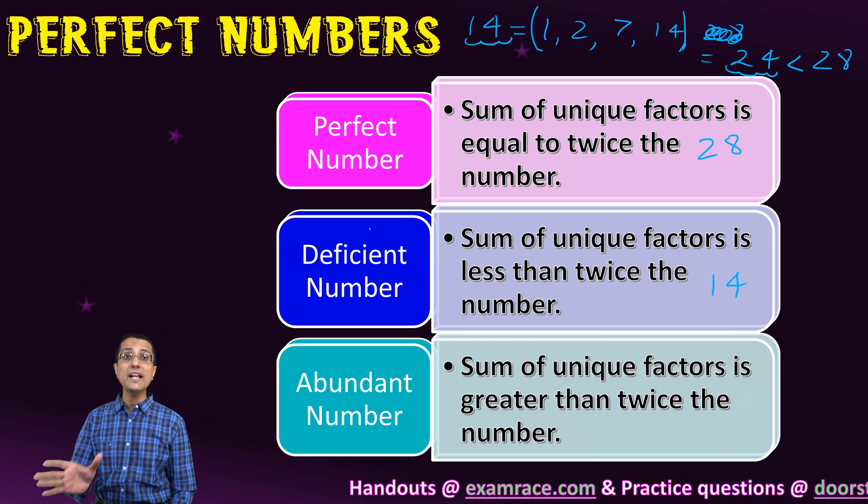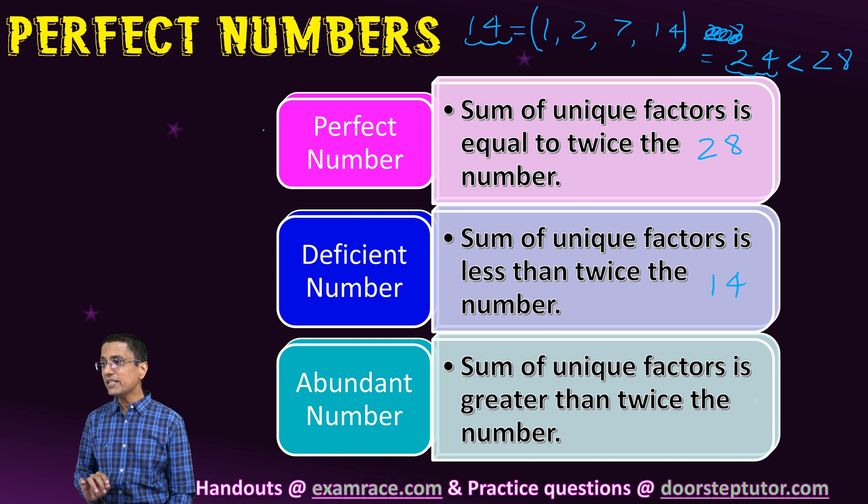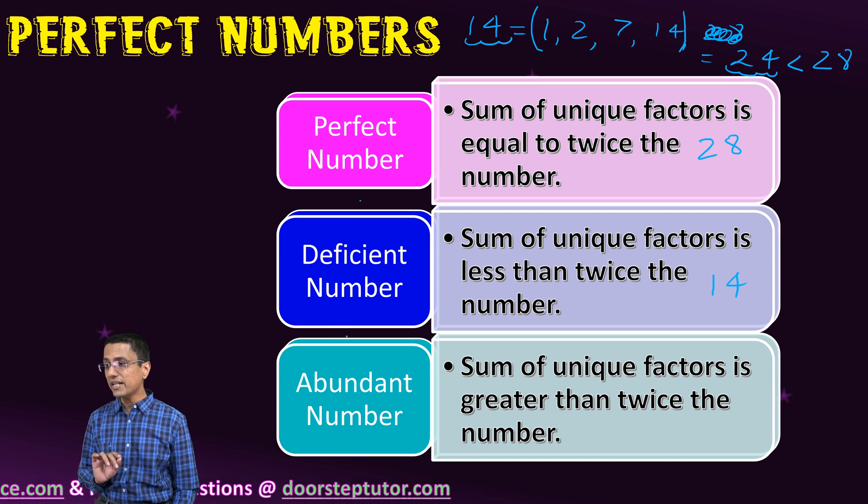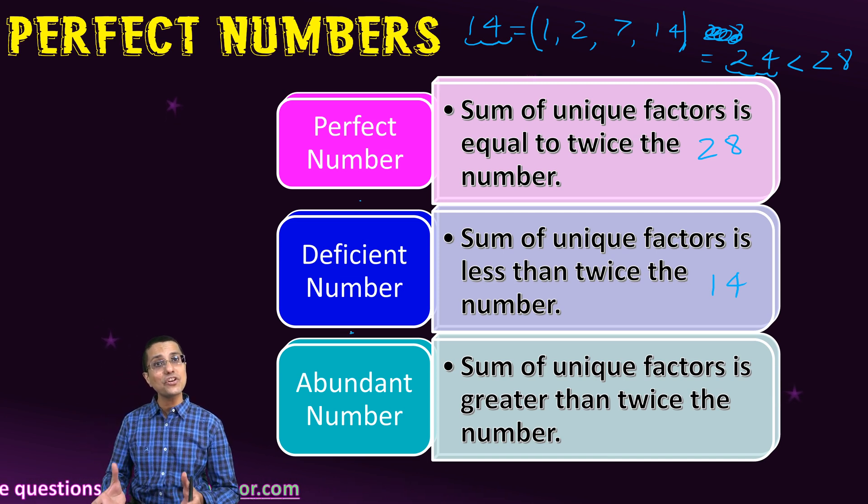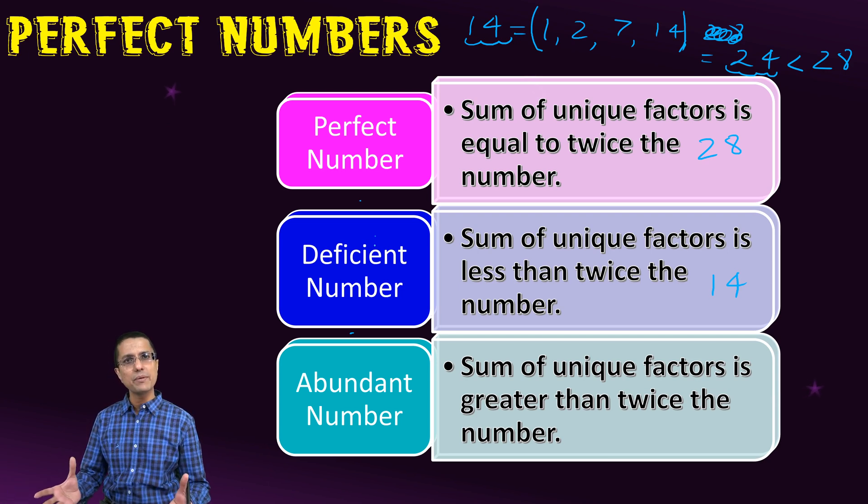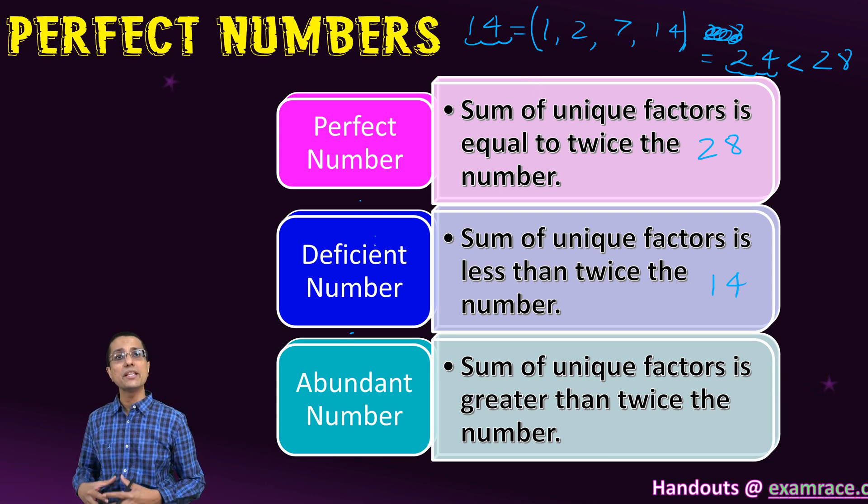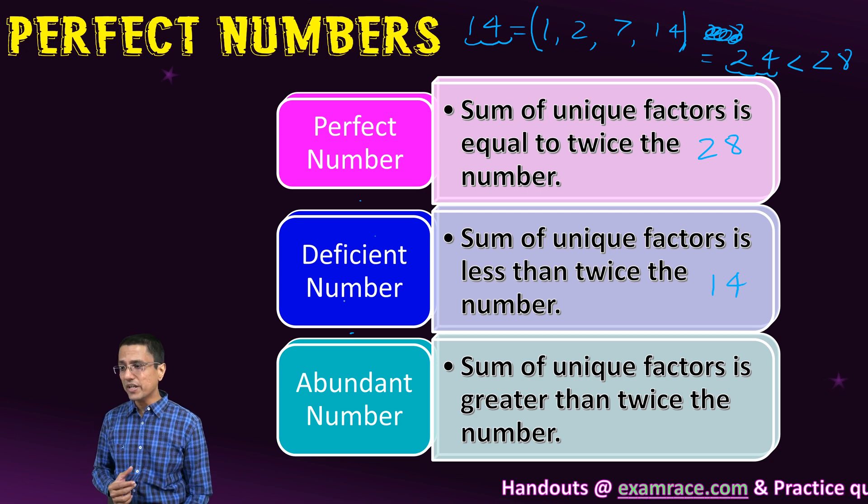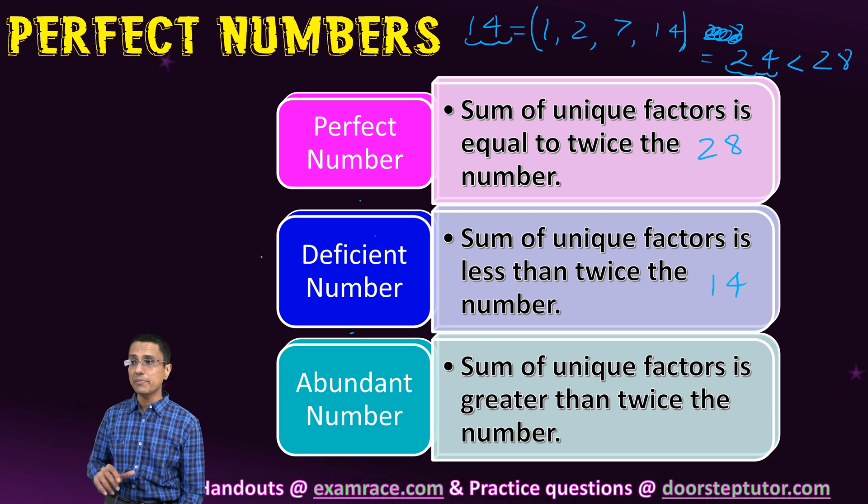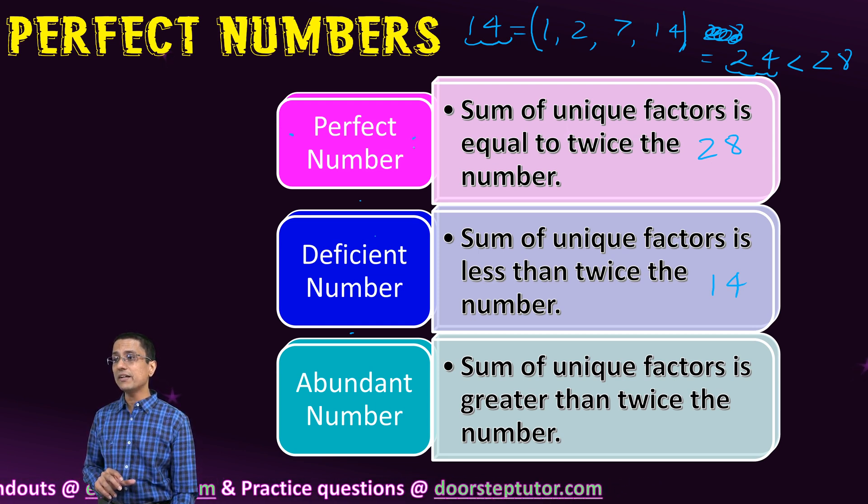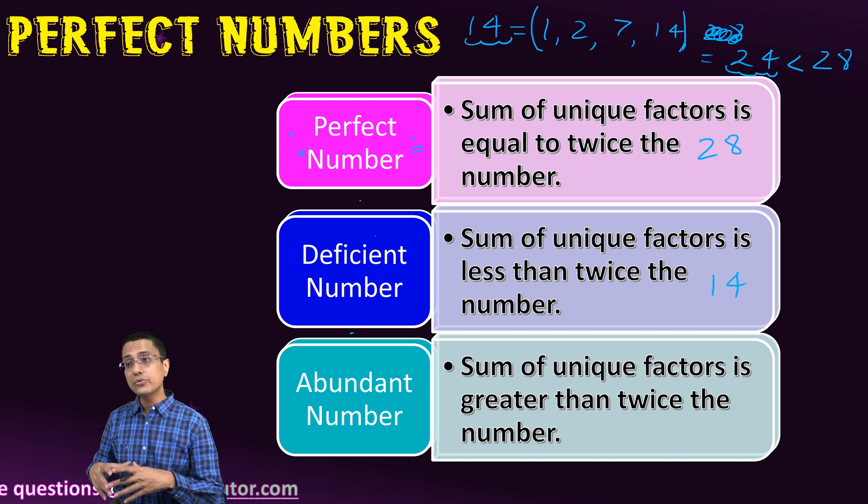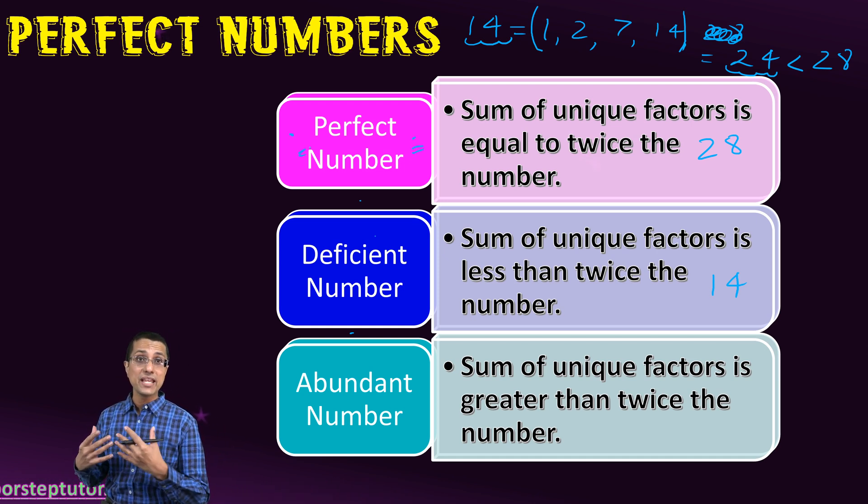These perfect numbers, deficient numbers, and abundant numbers are important not mathematically but astrologically. For certain things they found deficient numbers were more auspicious, so they would use that number in those ceremonies. For other things, abundant numbers were more auspicious. Perfect numbers were reserved for very special ceremonies.